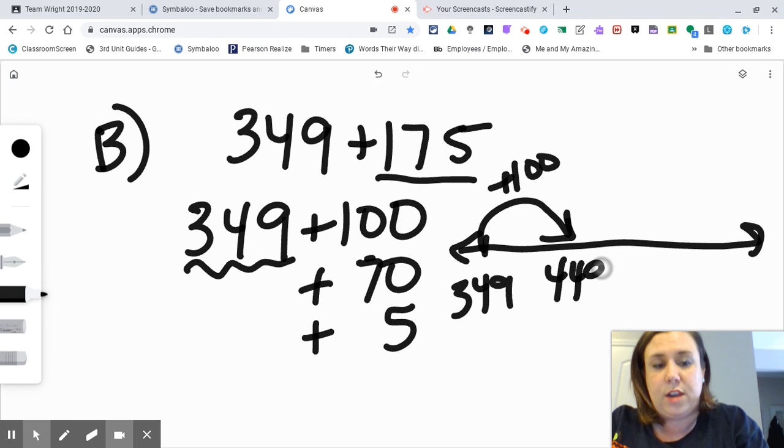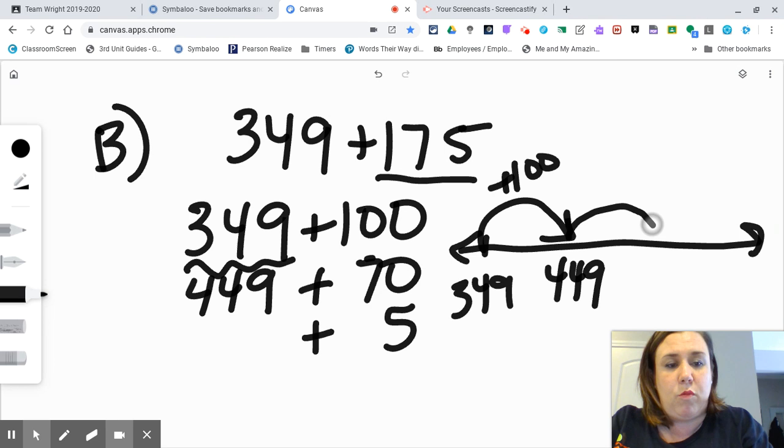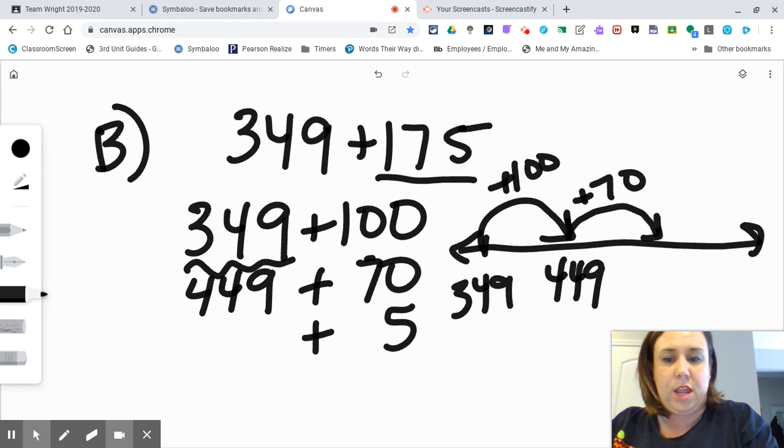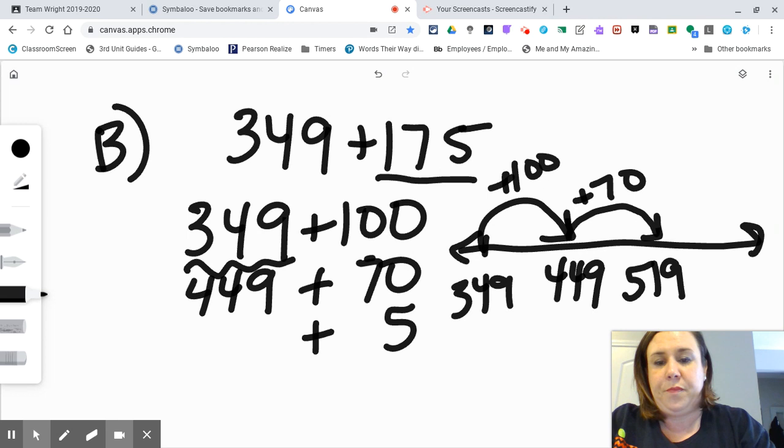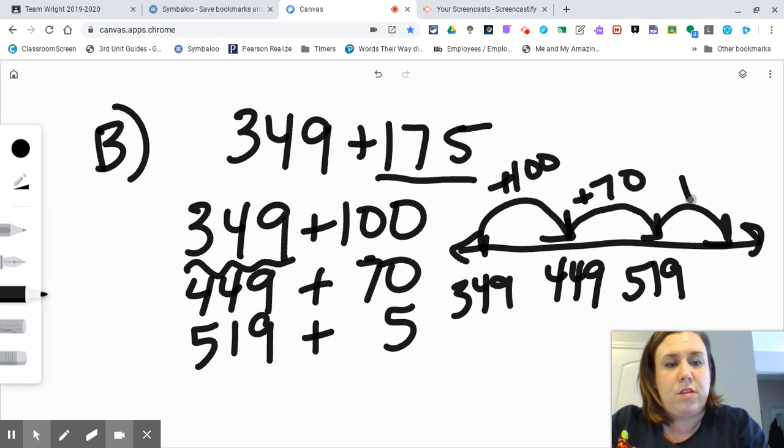Add 70, I can make one big jump or I can do small parts counting up from 40. That's gonna get me to 519, and then 519 plus 5, I can count up from 19 to get 524.